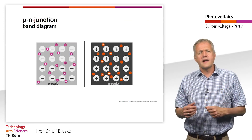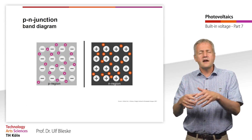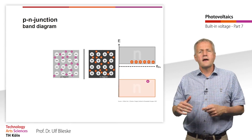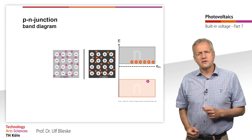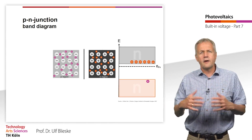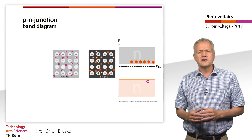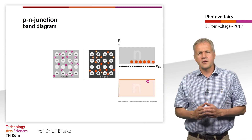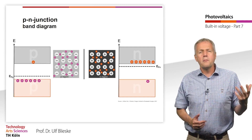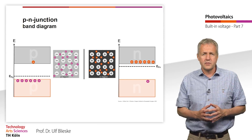Let's first look at the band diagrams in the separated p and n regions. In the n region, there are many electrons in the conduction band and hardly any holes in the valence band. The Fermi energy level of the n region is just below the conduction band. In the p region, there are many holes in the valence band and only a few electrons in the conduction band.